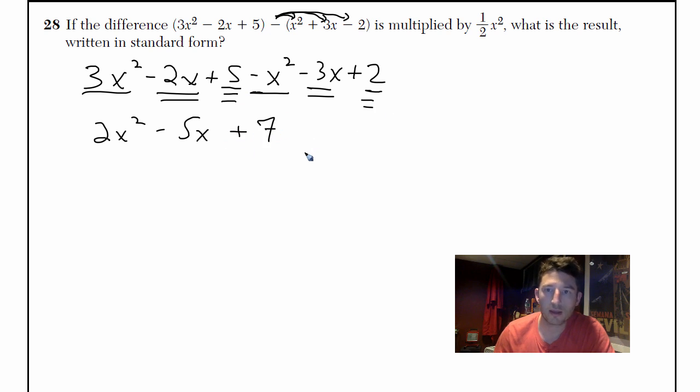Okay, so now the result is multiplied by ½x². What is the result? So now we're just going to take half of everything. So a half times 2 is just 1, and then x² times x² is x⁴.